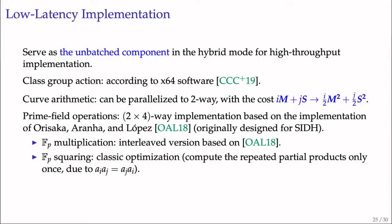As for prime field operations, we developed a two-times-four-way implementation based on the implementation of Koziel, Azarderakhsh, and Jao, originally designed for field multiplication of SIDH. Two-times-four-way means it performs two field operations in parallel, where each operation uses four elements of the vector. We slightly optimized field multiplication by interleaving integer multiplication with Montgomery reduction. Based on the same classic optimization technique, we developed a dedicated four-times-four-way squaring as well.